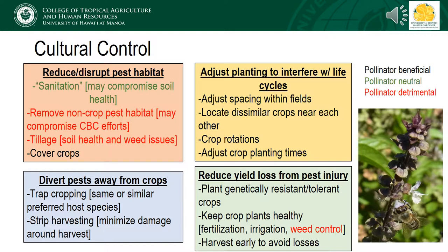Cultural control refers to techniques and strategies that disrupt pest life cycles or remove extra habitat where they may thrive or reproduce, and for the most part these are beneficial practices for pollinators. This includes sanitation or removing debris that pests may thrive in, though this can also compromise soil health. Tilling helps to kill pests that may live in the soil, though it also contributes to worse weed issues, and in areas where ground-nesting bees are present, it can destroy their nests. Cover crops may also disrupt pest habitat when incorporating flowering plants that may be deterrent to the pests.